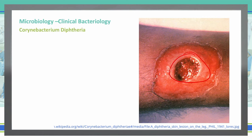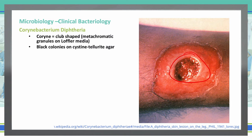Breaking down the name Corynebacterium specifically: 'coryne' stands for club-shaped, and that's where we see our metachromatic granules on Loeffler media. We also see black colonies under specific cysteine tellurite agar. We treat Corynebacterium diphtheriae with an antibiotic, and we can also give a diphtheria antitoxin to help reduce the effects of that exotoxin.